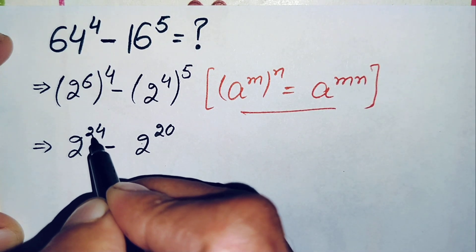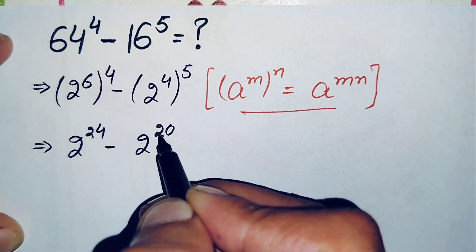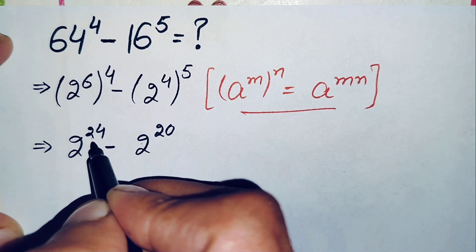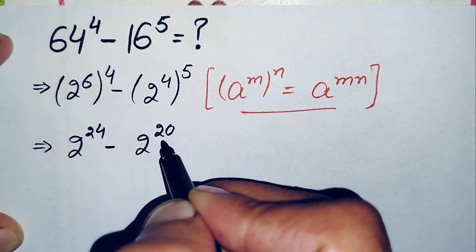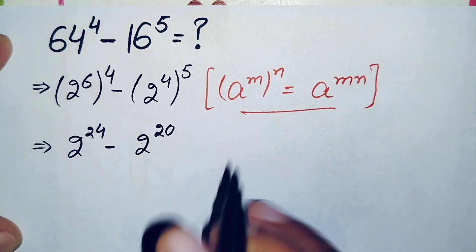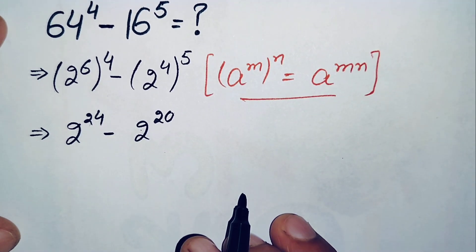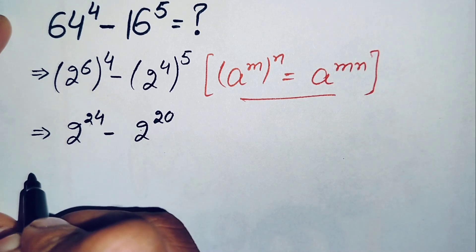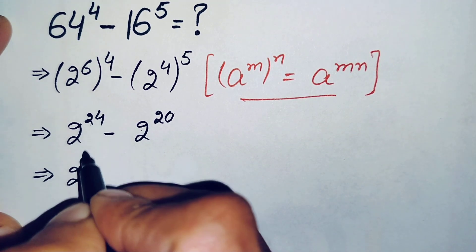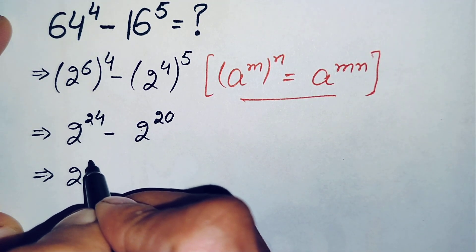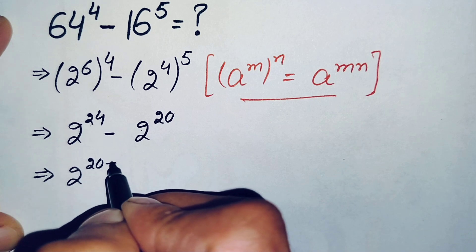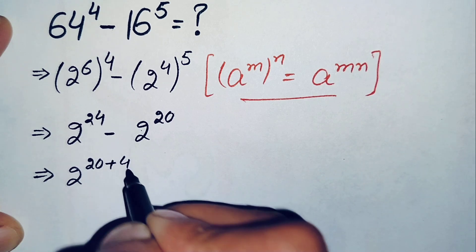Next we will try to make these two powers the same. To do that, we will change 24 to the sum of 20 plus 4, so we can write 2 raised to power 24 as 2 raised to power 20 plus 4.